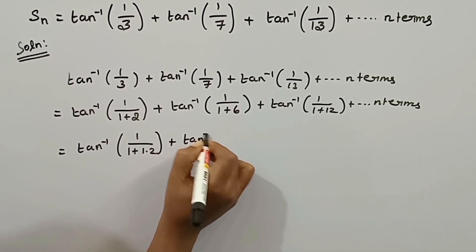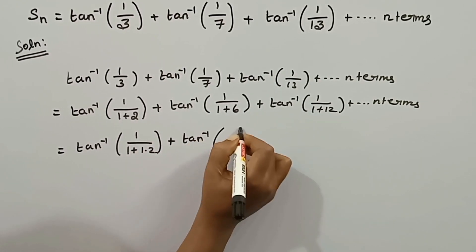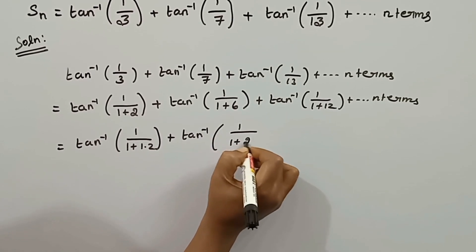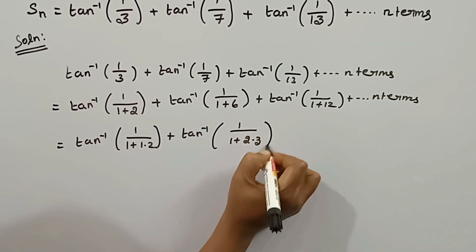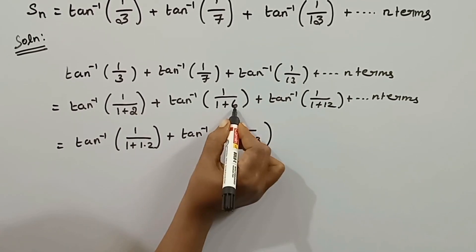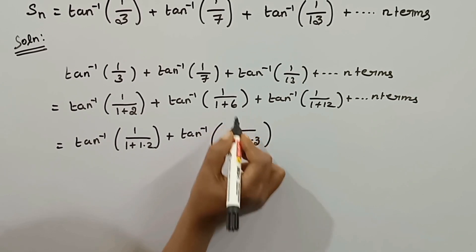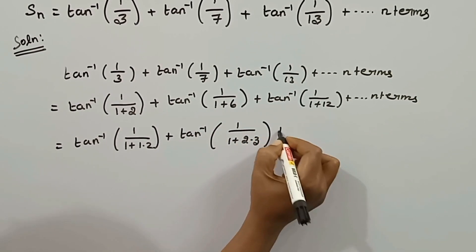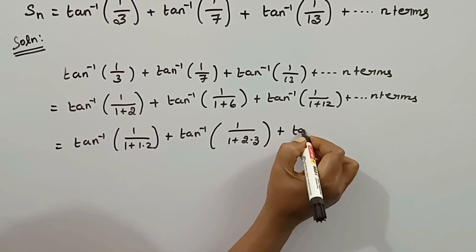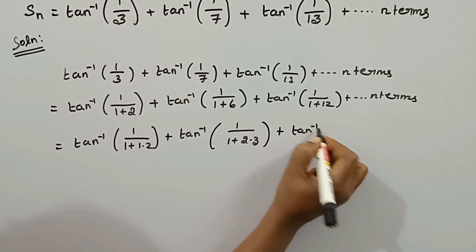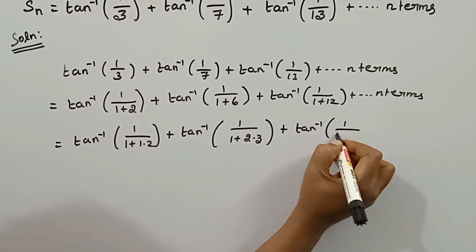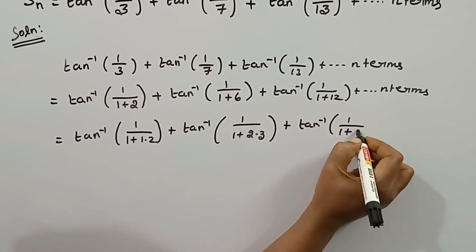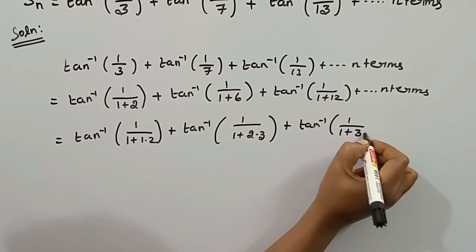We note that tan inverse of 1 by 1 plus 2·3. We mark the term. So we note that 1 by 1 plus 3·4. This is how we mark the general term in the series.